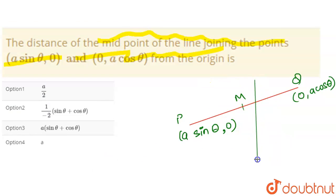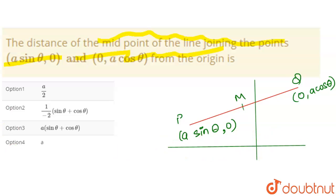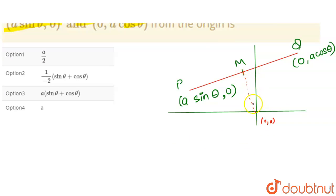We have to find the distance of the midpoint M of the line from the origin O, which is (0, 0). So we need to find the distance OM. To do that, we first need the coordinates of the midpoint M.